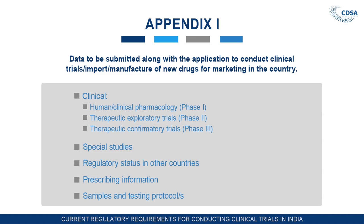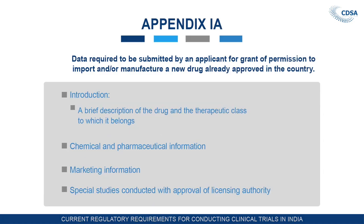Samples and testing protocol are also required to be submitted. Appendix 1A covers data required to be submitted by an applicant for grant of permission to import and/or manufacture a new drug already approved in the country. This also applies for import and manufacture of a new drug, provided that the drug is already approved in the country and somebody would like to manufacture it with a new dosage form, strength, or indication.